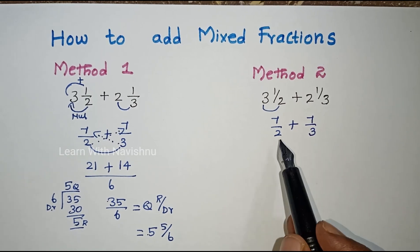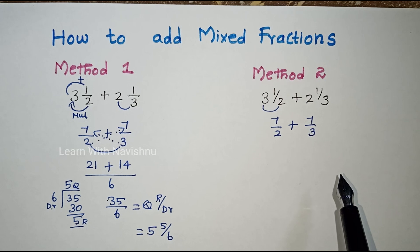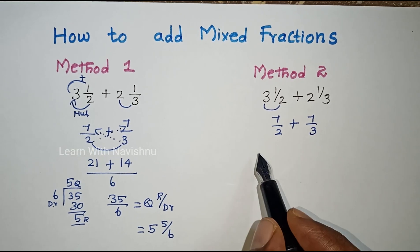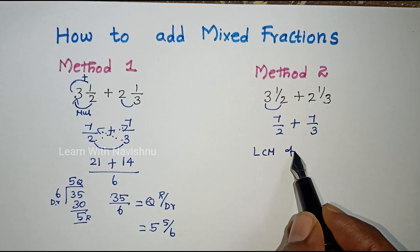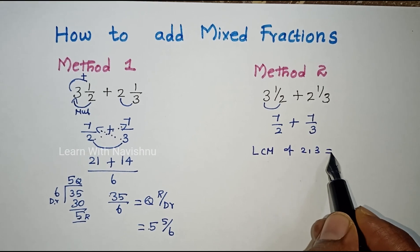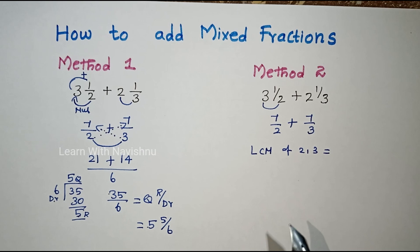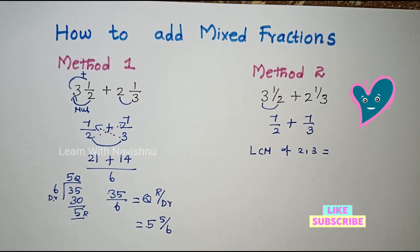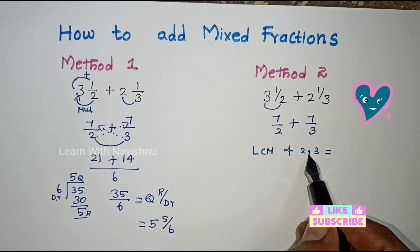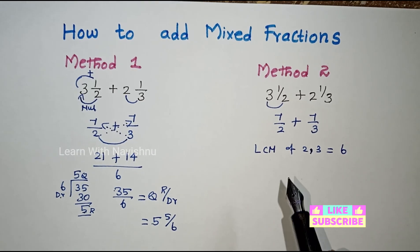If the denominators are the same, you can add the numerators directly. But we don't have the same denominator here. So, we use LCM. You can use L-Division method. Look for common factors. The LCM is not just multiplication.